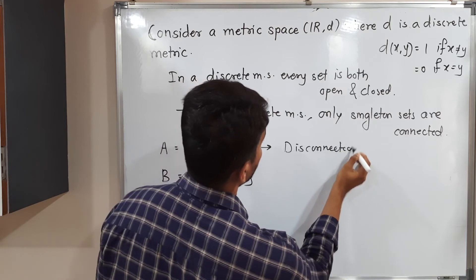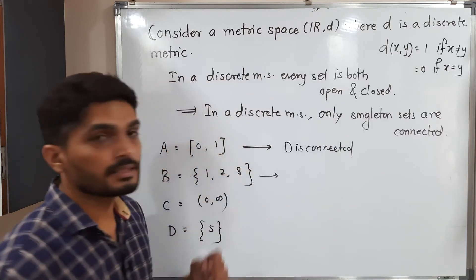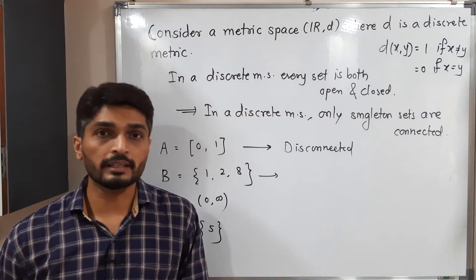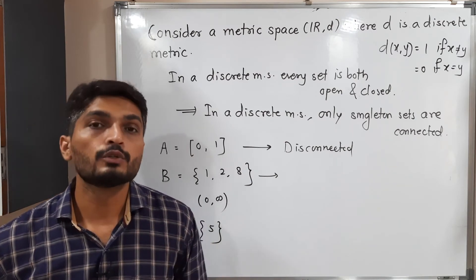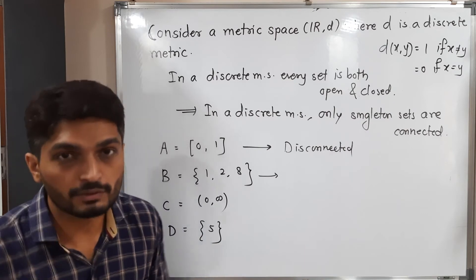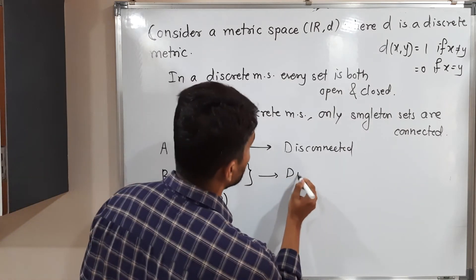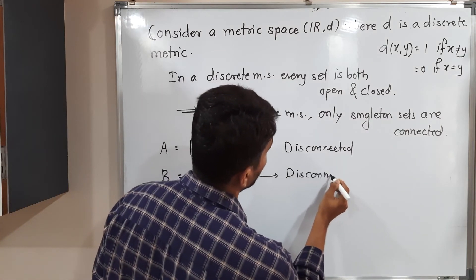Let us discuss the next case. B equals {1, 2, 8}. I agree it has only three elements, but definitely these are more than one. So it has more than one element. That's why again, we can say it is disconnected.